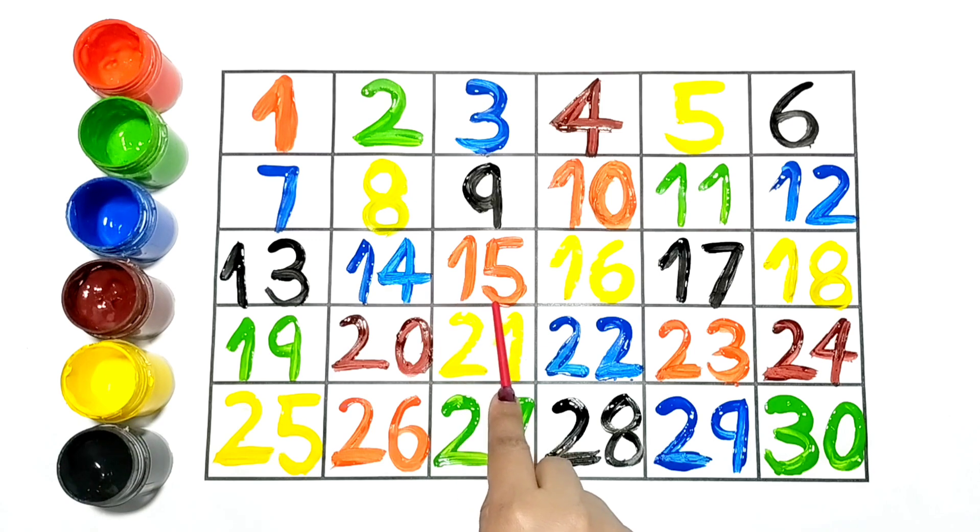15, 16, 17, 18, 19, 20, 21, 22, 23, 24, 25, 26, 27, 28, 29, 30.